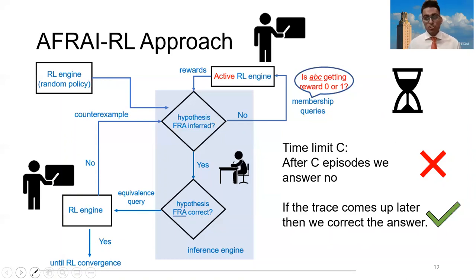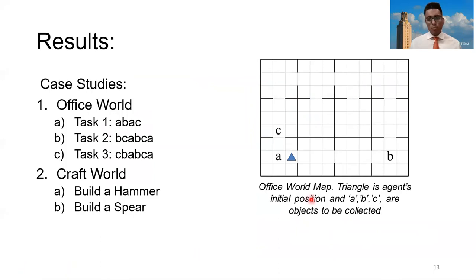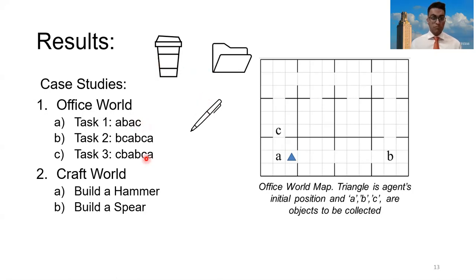We've now concluded discussing our algorithm and are ready to move to the results. We tested our algorithm in two case studies. The first is office world — a scenario where a robot in an office is supposed to get things for you. The robot or agent is represented by a triangle. Letter A represents coffee, letter B represents a filing system, and letter C represents a pen. We have the agent perform a variety of tasks — for example, A, B, A, C means get coffee, get a file, get coffee again, and then get a pen.